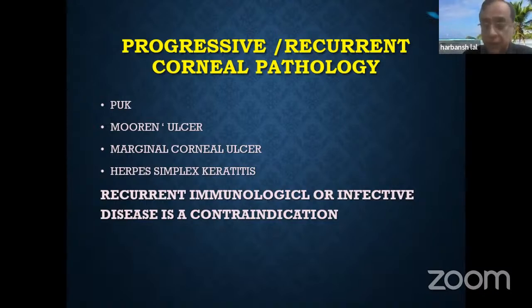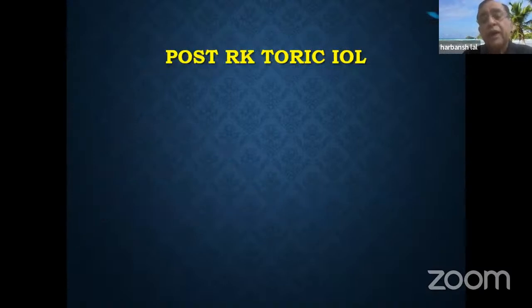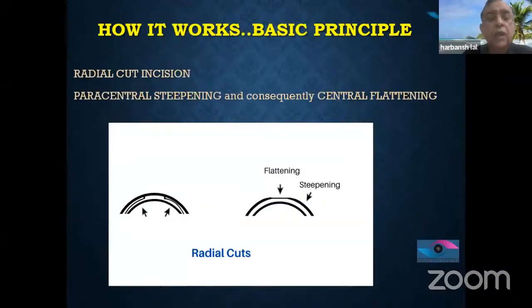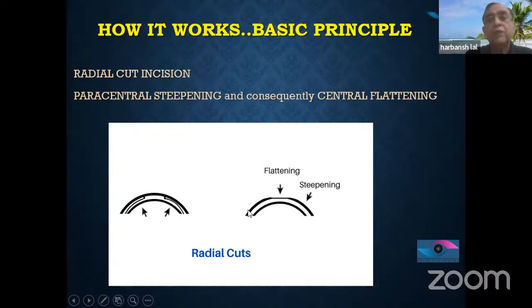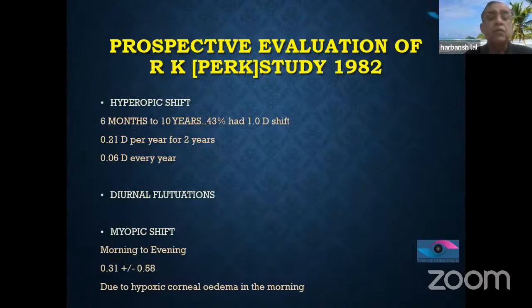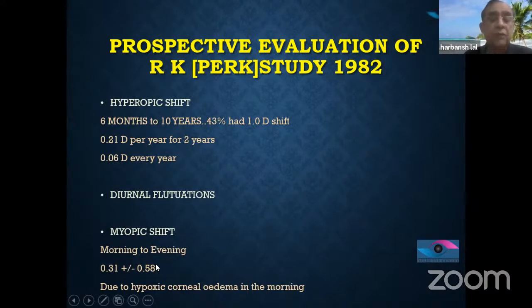Progressive and recurrent corneal pathologies like PUK, Mooren's ulcer, pellucid marginal degeneration, herpes simplex, recurrent immunological conditions, and pterygium are contraindications because toricity will keep changing. Taking post-RK as a prototype: in RK surgery, radial cuts were made leaving the central 3mm, causing paracentral steepening and central flattening — this is an ongoing progressive process. These patients have a hyperopic shift — initially myopic, then keep becoming hyperopic. There is also diurnal variation: hyperopic in the morning due to corneal edema, myopic by evening.